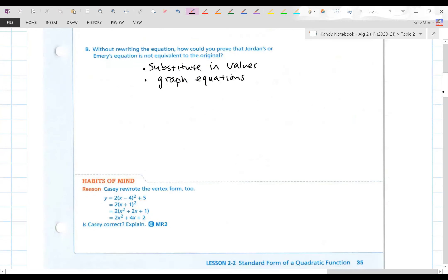Habits of mind. Casey rewrote the vertex form too. y equals 2 times x minus 4 squared plus 5 equals 2. Oh, I see it right there. Casey's not following order of operations. You try to add negative 4 plus 5 and got 1. That's illegal. Come on, Casey. You can do better than that.